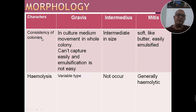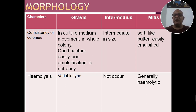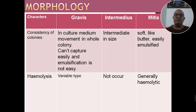Consistency of colonies: Gravis form में culture medium में entire colony के अंदर movement देखी जा सकती है, cannot be captured easily, और emulsification is not easy। Intermediate form में colony intermediate in size होती है। Mitis form soft और मखन के समान होती है, and it is easily emulsified।